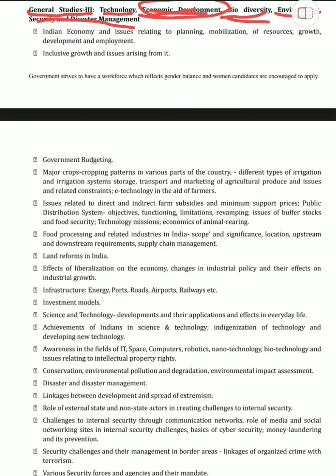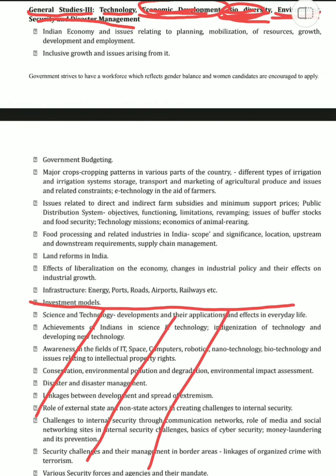Biodiversity is different from environment. When we say environment, it does not include biodiversity — your IUCN status, your threatened species, where they are found, what are the parks, conservation areas and reserves for them. All of these fall under biodiversity and not environment, so that's a different portion with a different weightage. Right now we are focusing on economics — we'll see what all we have to study.